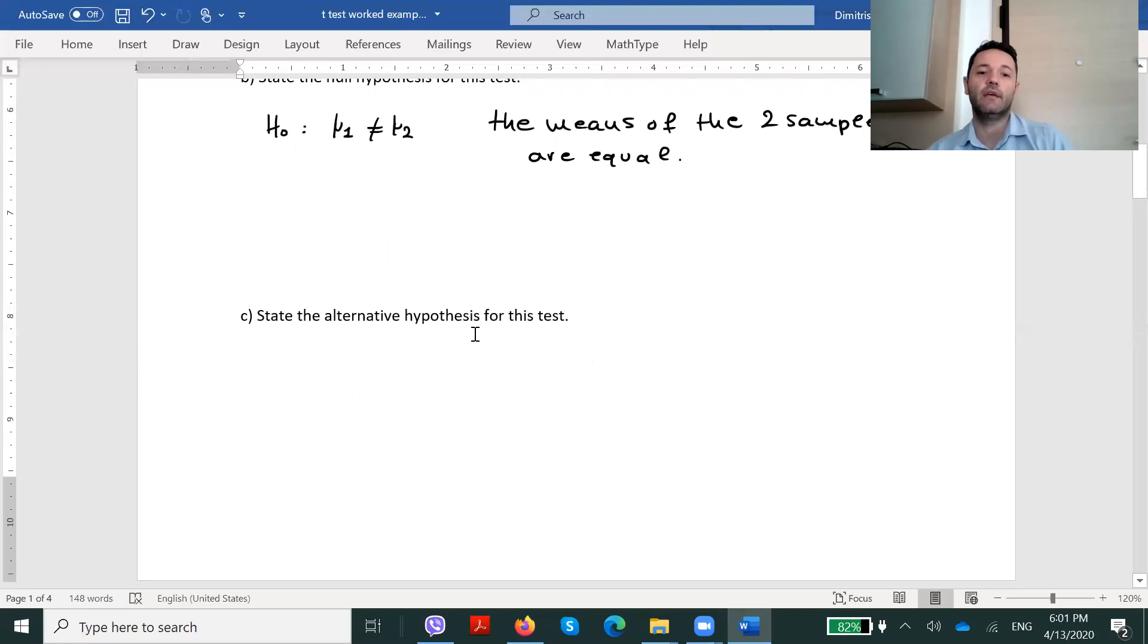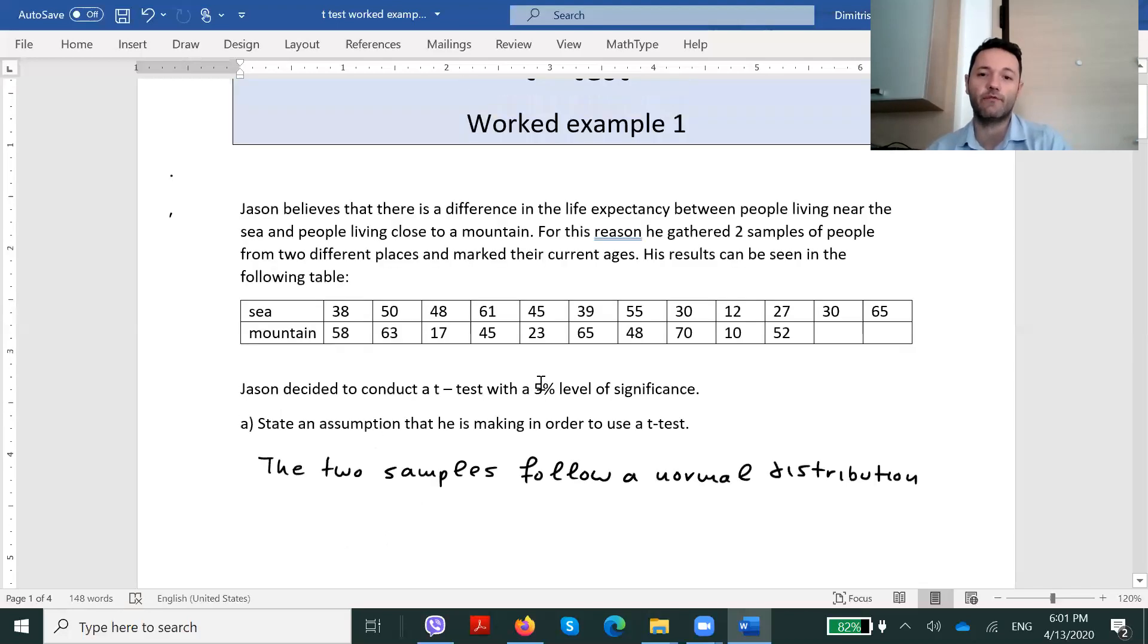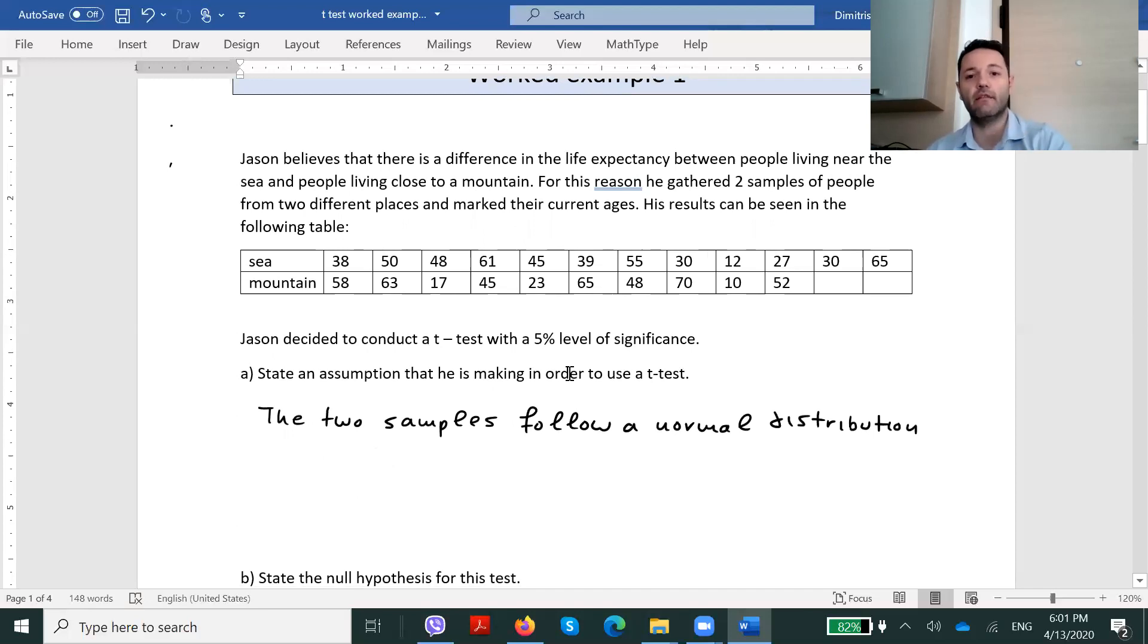Moving on in C, state the alternative hypothesis for this test. Regarding the alternative hypothesis in a t-test, there are three options. The first one is that the two means are different, the second one that μ1 is bigger than μ2, and the third one that μ1 is smaller than μ2. It all depends. It's up to us to understand through the given information which one to choose. And let's read again the given information. Jason believes that there is a difference. He simply believes that there is a difference. He doesn't state that he believes that those who live close to the sea tend to live more than those who live close to the mountain or the opposite.